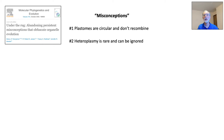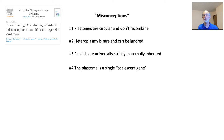What are these misconceptions? First, that plastomes are circular and don't recombine. Second, that heteroplasmy is rare and can be ignored. Third, that plastids are universally, strictly maternally inherited. And the first three of these together contribute to the last one, most critical for phylogeny reconstruction: that the plastome is a single coalescent gene.